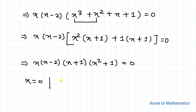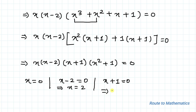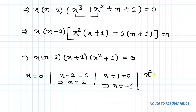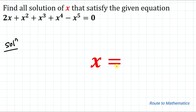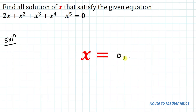From here we can write: x equals 0 is one solution. x minus 2 equals 0 which implies x equals 2 is our second solution. x plus 1 equals 0 which implies x equals minus 1 is our third solution. And x squared plus 1 equals 0 implies x squared equals minus 1, which implies x equals the square root of minus 1, which implies x equals i. So the solutions for x that satisfy the given equation are 0, 2, minus 1, and i.